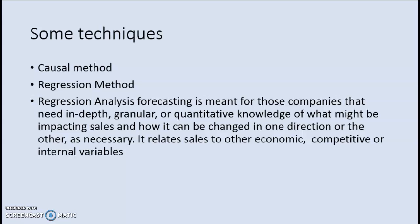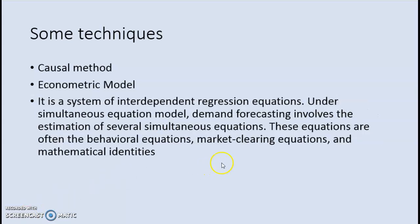Now, it may so happen that a company has been able to establish relationship with more than one variable. So for example, the sales may be dependent, not just on the price of the product, they also believe it has a relationship with the income of the consumer. And in such a situation, then what do we do? We use econometric model, which is a system of interdependent regression equations, which needs more than one equation.